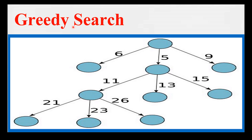Greedy search selects the next word without considering how subsequent words might change the probability of the entire sentence. For example, the word 'the' might be the most likely choice in this context, but the following word — 'the roof' or 'the mat' — might be more fitting for the story.